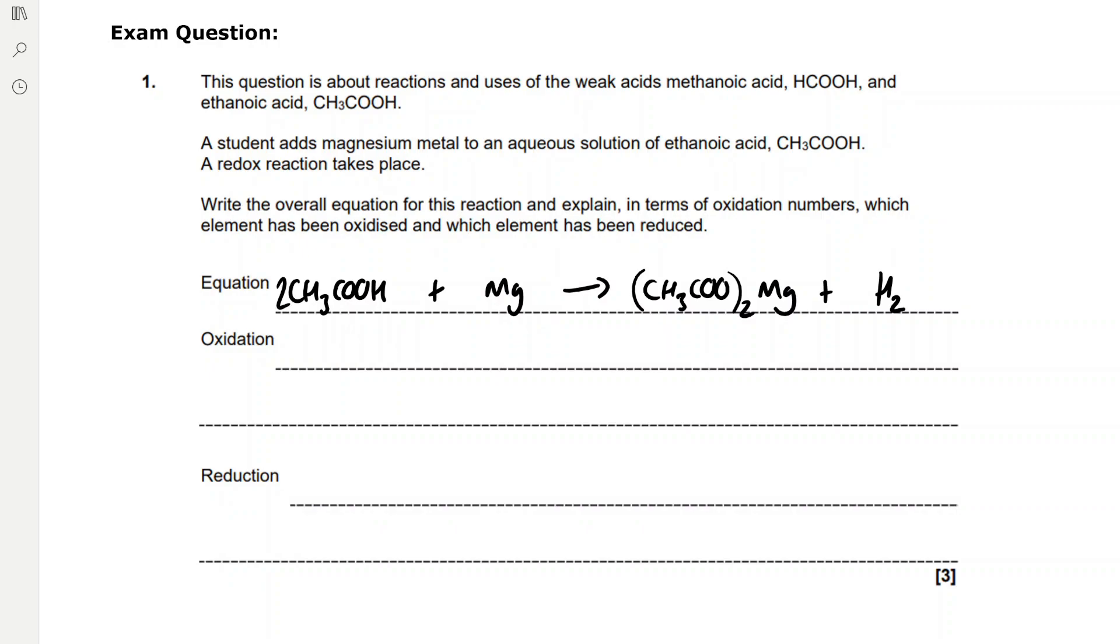If we have a look at what could be changing oxidation number, magnesium is going from an element on its own to an ion. So it's going to be oxidized from zero as an element to +2 in magnesium ethanoate. And hydrogen has been reduced from +1 in ethanoic acid to zero in hydrogen.